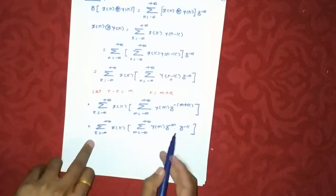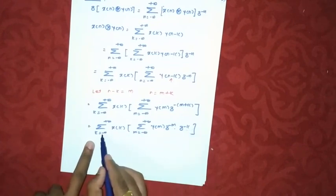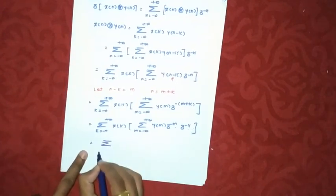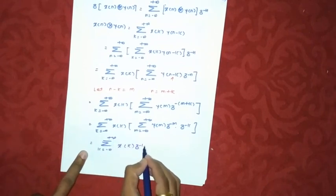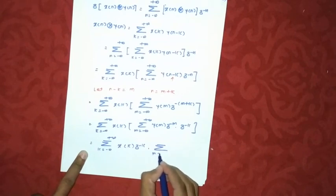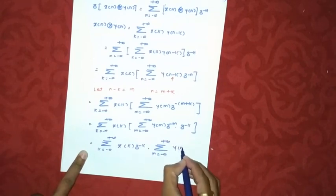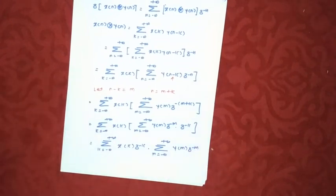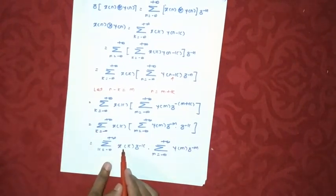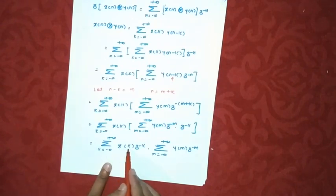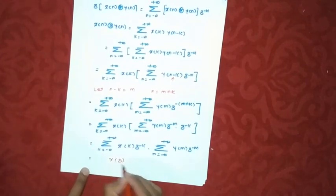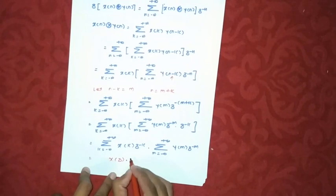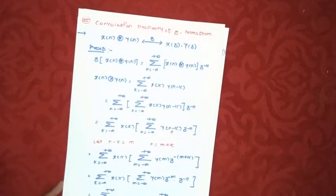So our function becomes summation with respect to k, x of k into z raised to minus k, into summation m minus infinity to plus infinity y of m into z raised to minus m. Now if you observe carefully, this is simply a formula of z transform of x of k and this is y of n. So I can write this equation as x of z times y of z and this becomes our convolution property.